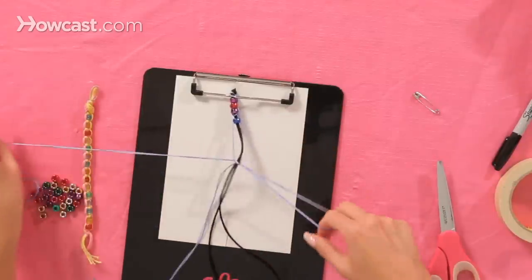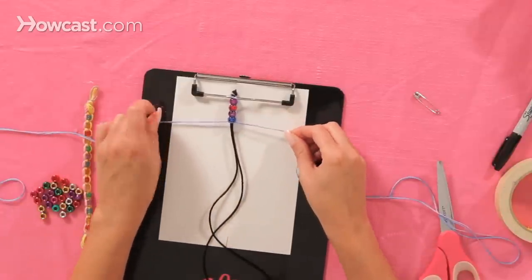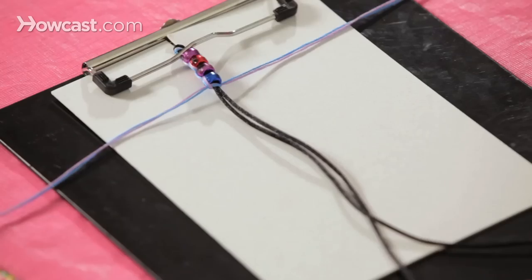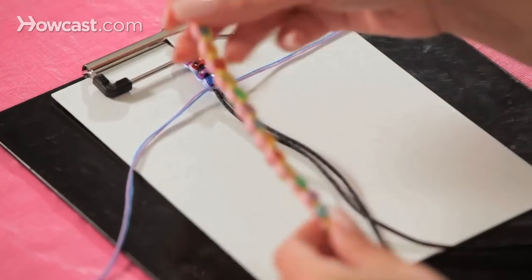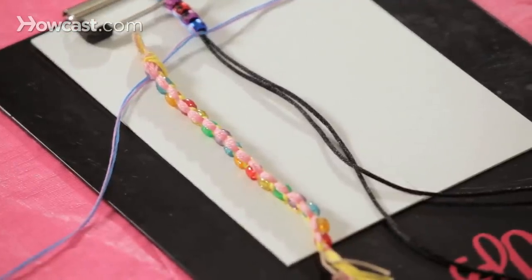After a couple of stitches, it gets easier to do it. Pull that down and pull it tight. When you're finished making it, it will look like this. And that's how you make a friendship bracelet with beads.